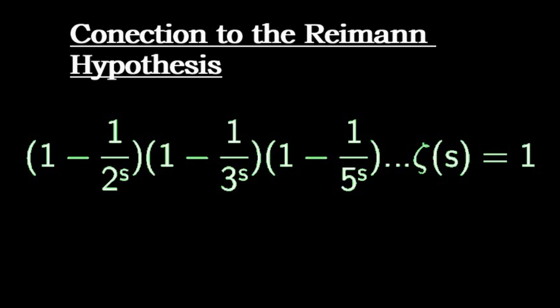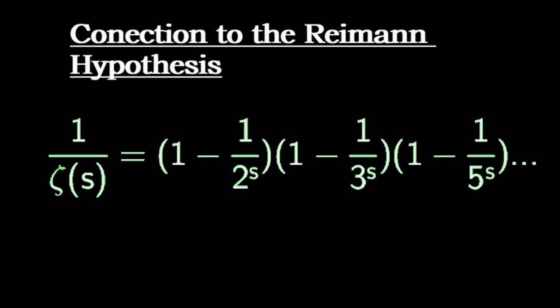On the left hand side, we have an infinite product involving prime numbers. So Euler realized there was a way to write the zeta function as an infinite product involving primes. So now we have that the reciprocal of the zeta function can be written as an infinite product involving prime numbers.